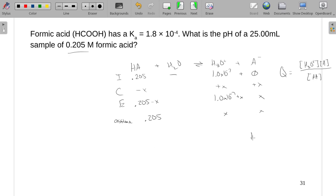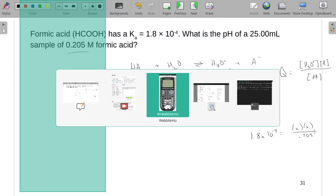Because we'll have a situation in this, 1.8 times 10 to the negative fourth equals X times X all over 0.205. And in this case, our X is, let's see...